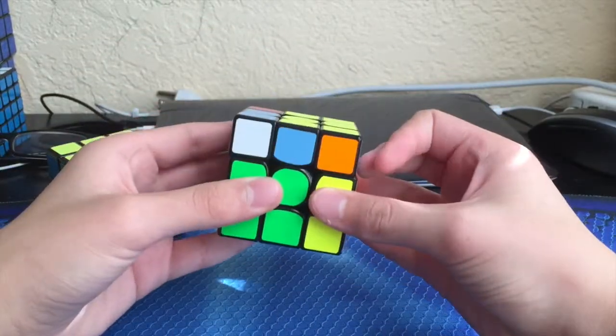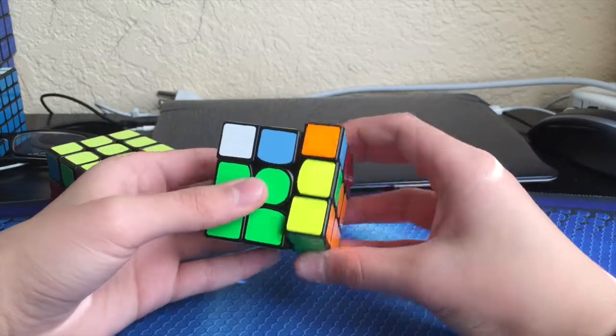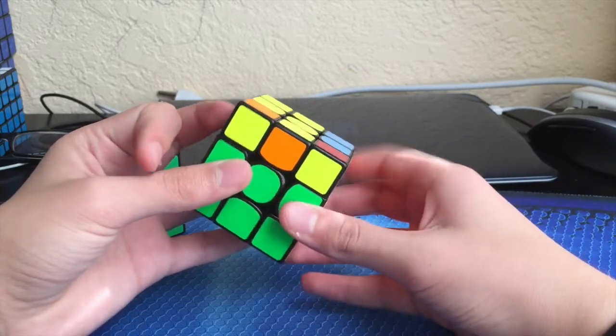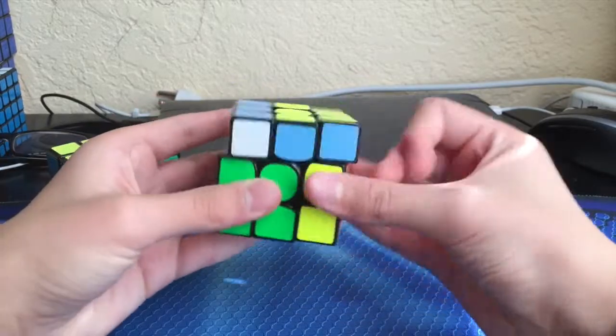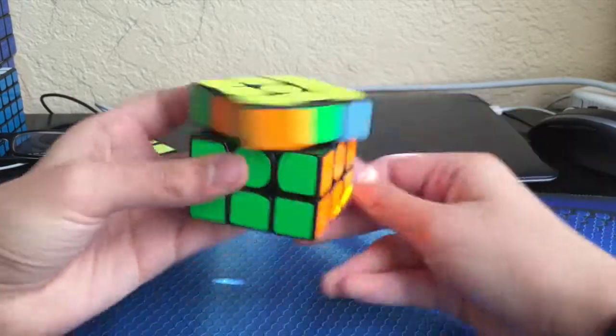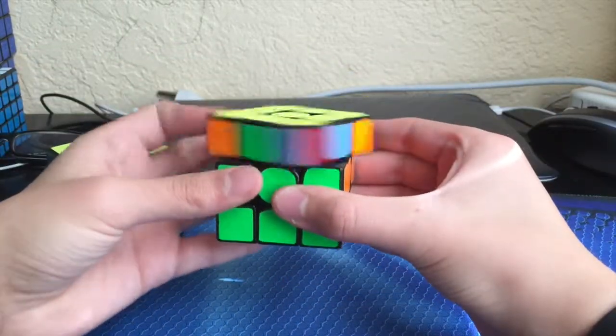You can double flick in the beginning of the R-perm, and then double flick with the other hand, and then go straight into this. But I really don't know how to double flick with my left hand. I'm not very good at it.